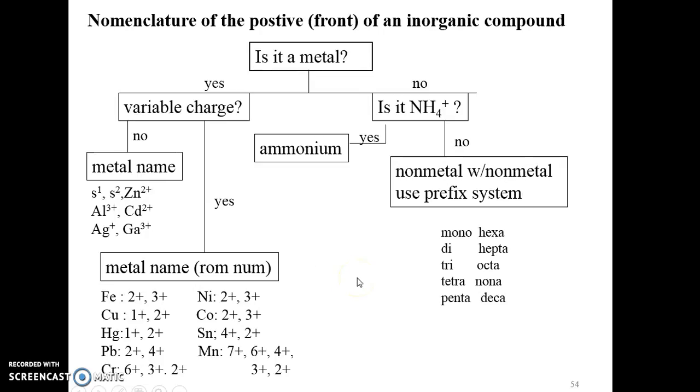How do you keep all this nomenclature straight? Well, I've created a decision tree to help you for the front part of the compound. First thing you can say, is it a metal?